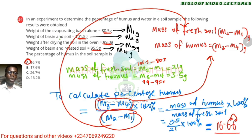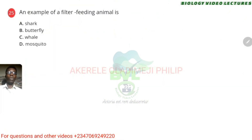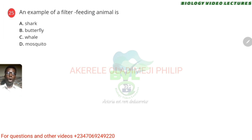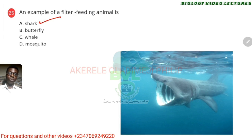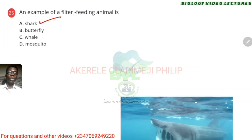I hope that made sense — you can pause and rewind to attempt the calculation. A filter feeder animal strains out food substances from water in an aquatic environment. This is a bit of a confusing one because both whale and shark are filter feeders. They both strain food out of water. For me, they are both correct. But if I were in that examination, I would pick shark — the first one there.